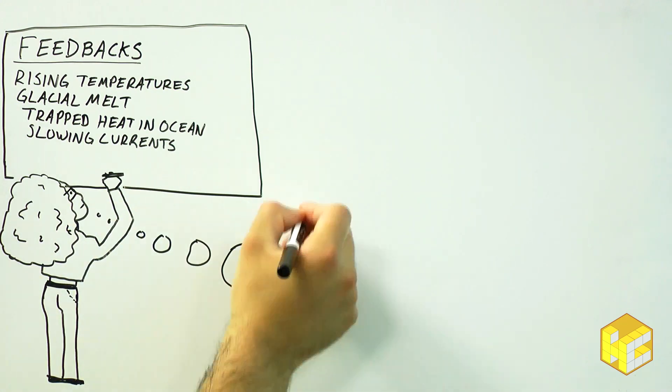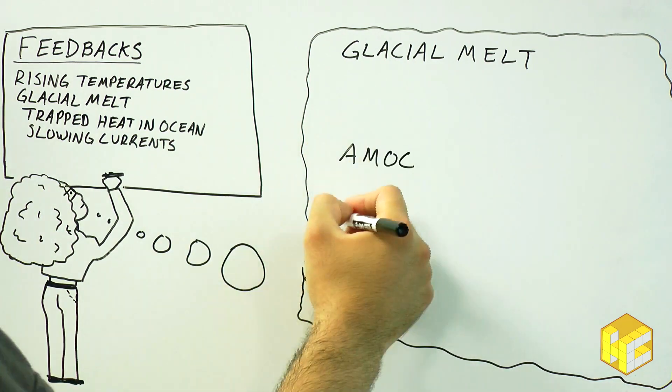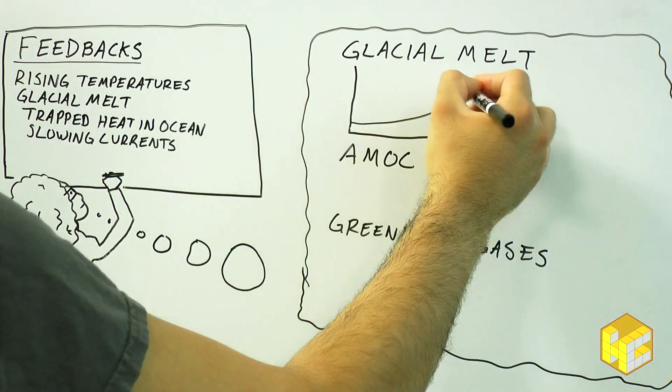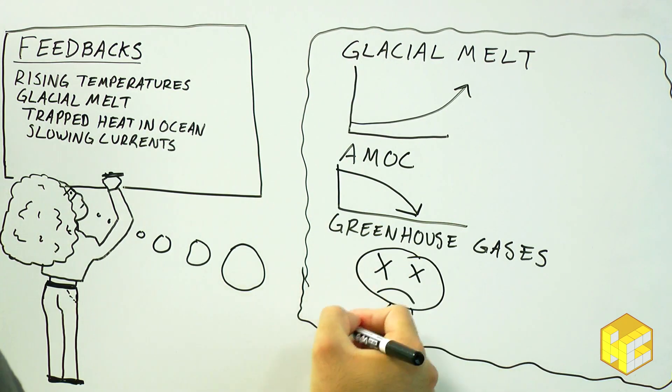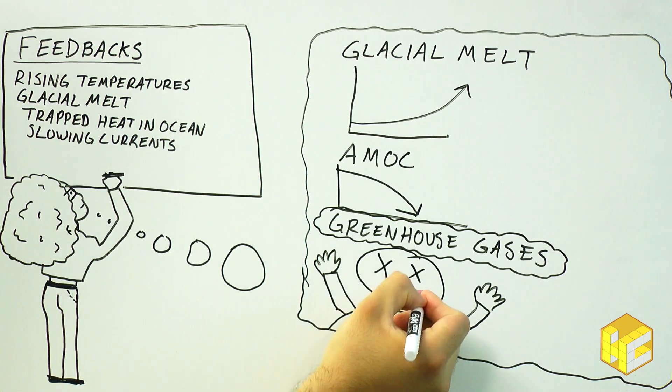However, current promises by member countries are not enough to meet that target. The same scientists making this claim suggest that if greenhouse gas emissions continue, multimeter sea level rise and the complete shutdown of the AMOC by the end of the century will be unavoidable.